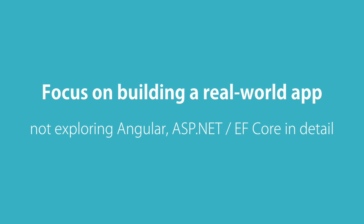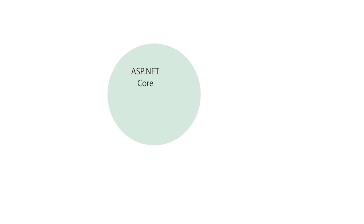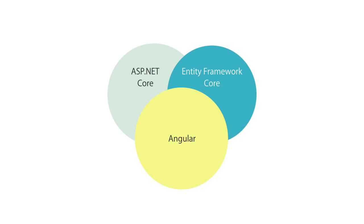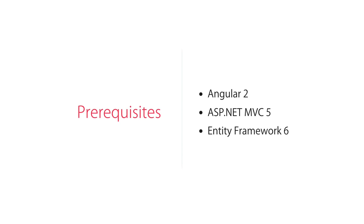Before we get started, let me clarify a few things about what this course is and what it isn't so you have the right expectations. Our focus will be on building a real world application and not to explore all features of Angular or ASP.NET Core, because each application, depending on its requirements, often needs only a subset of features in any given framework. It's impossible to talk about all the features of ASP.NET Core or Entity Framework Core and how they differ from their previous versions — that requires a separate course. I'm assuming you're familiar with Angular 2, ASP.NET MVC 5, and Entity Framework 6, and want to quickly get up to speed with .NET Core in a hands-on, pragmatic way.